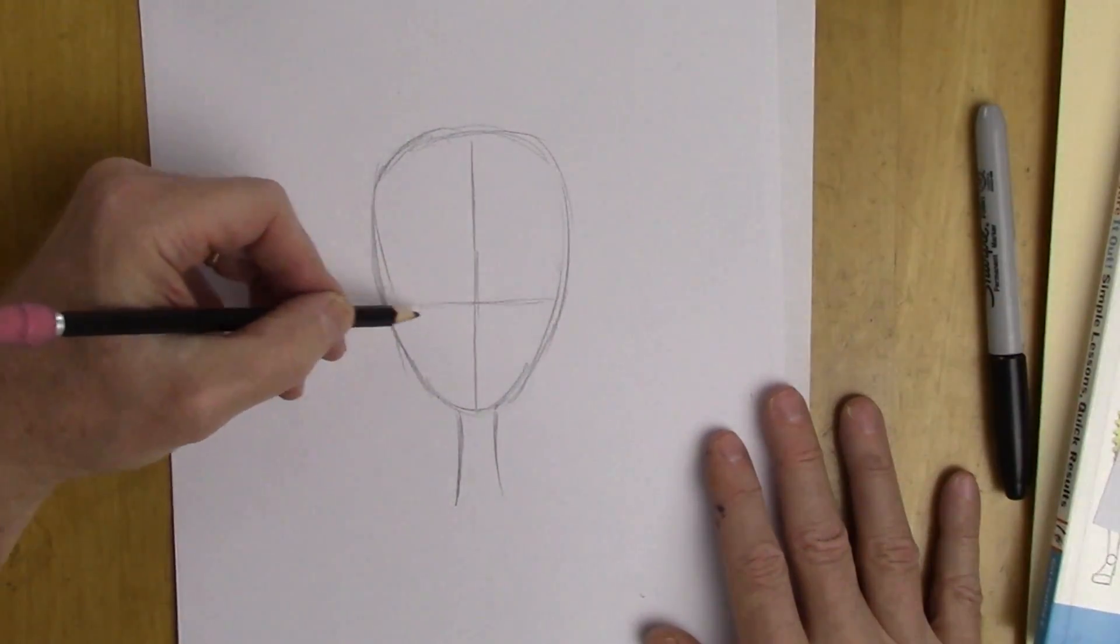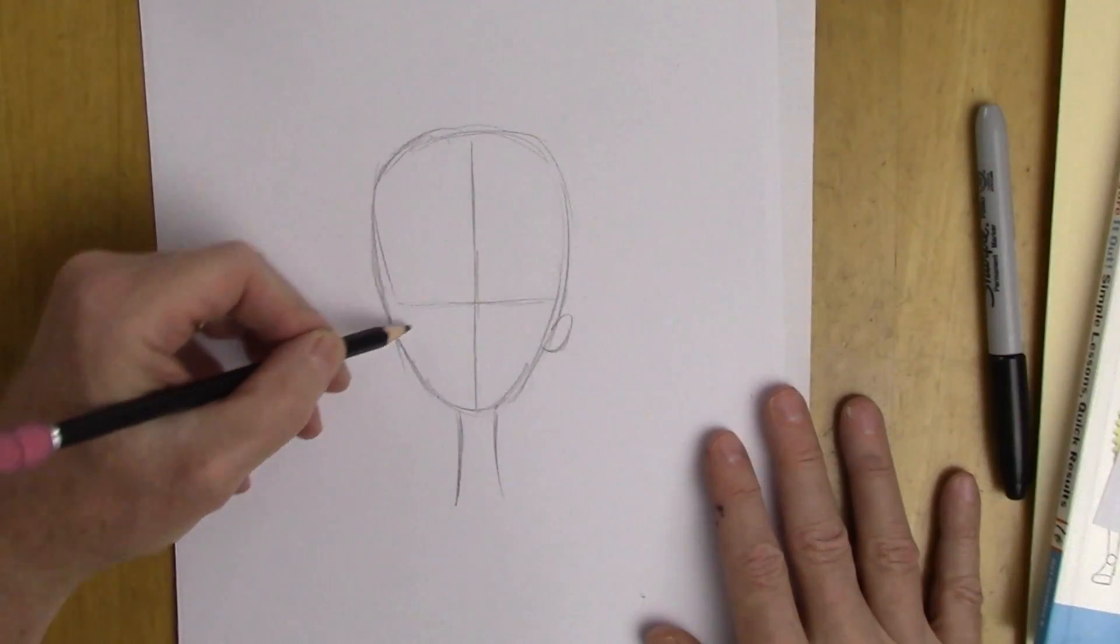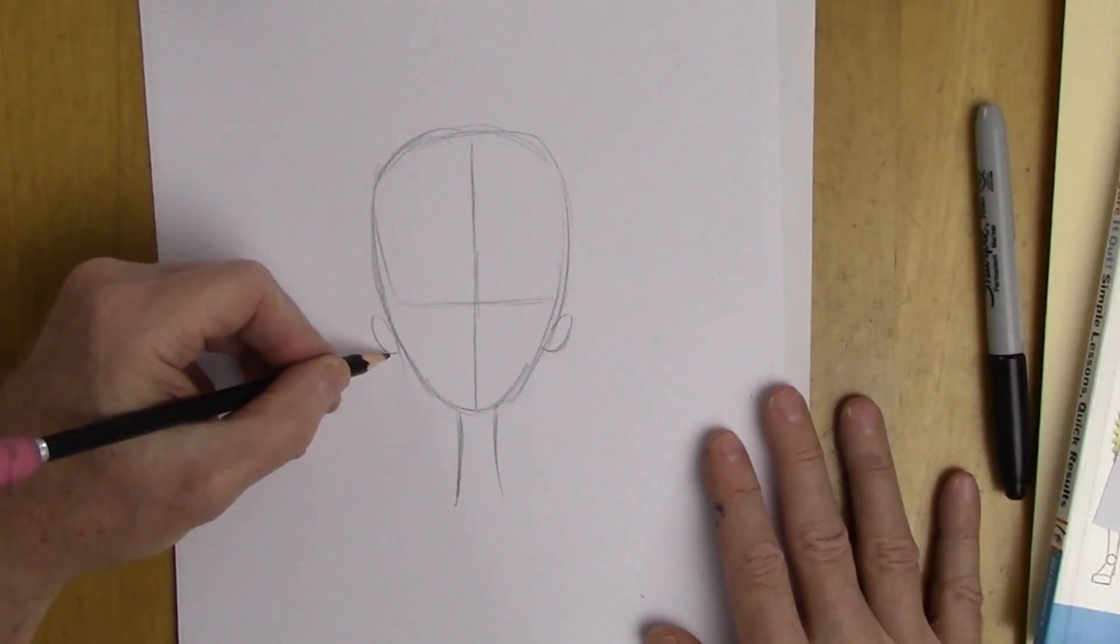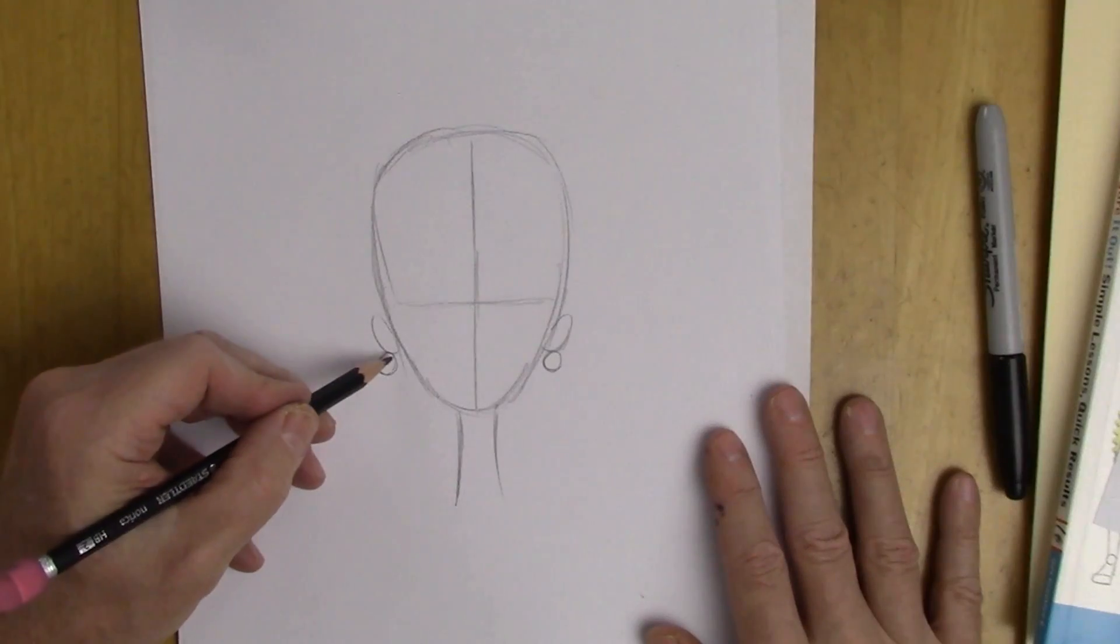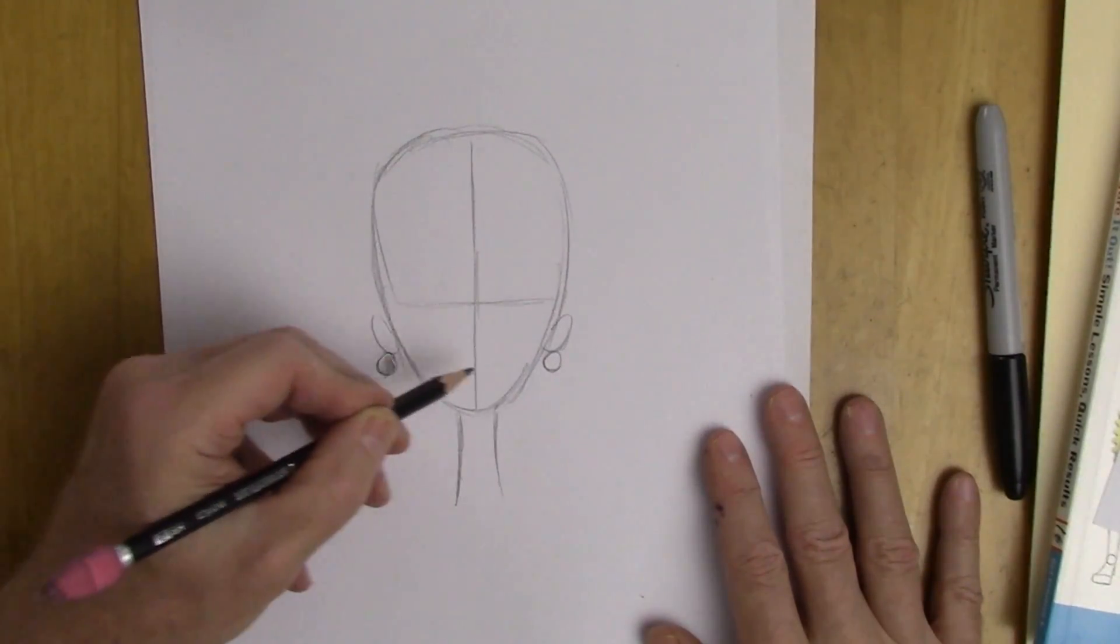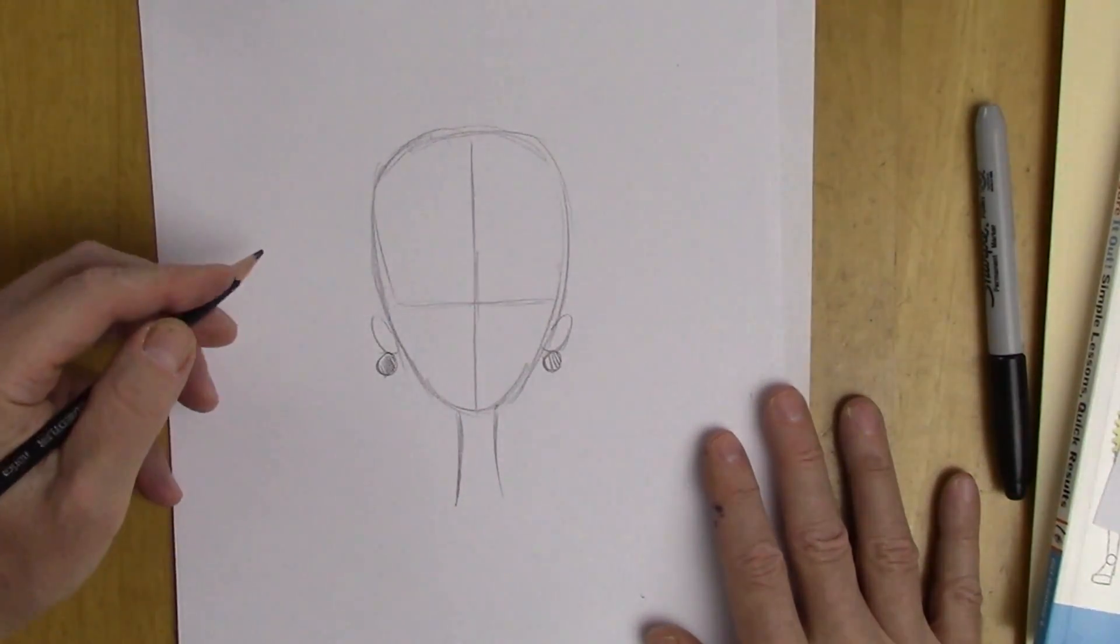And just below the eye line, little ears, big earrings. So it's looking kind of funny already, right? It's looking kind of kooky cartoon.